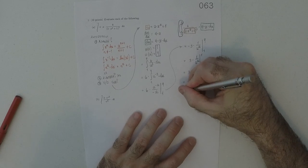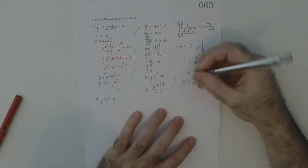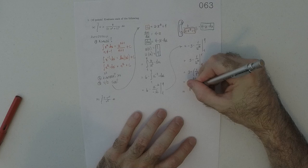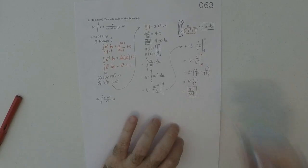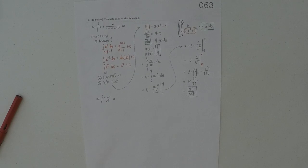And then, 81 is divisible by 3. So, this would be, what, 80 over 27. So, that's the answer to part A.